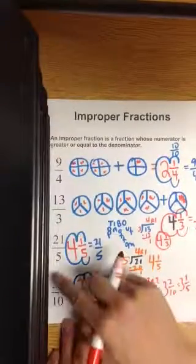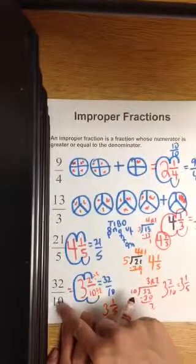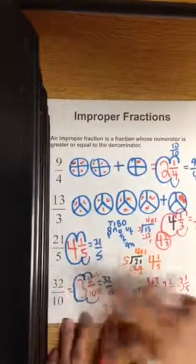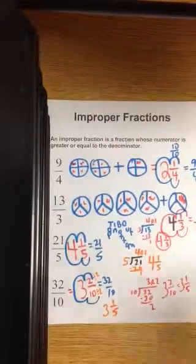So improper fraction is where the numerator is greater than equal to the denominator. You just need to figure out how many denominators go into that numerator. And that is the study of improper fractions.